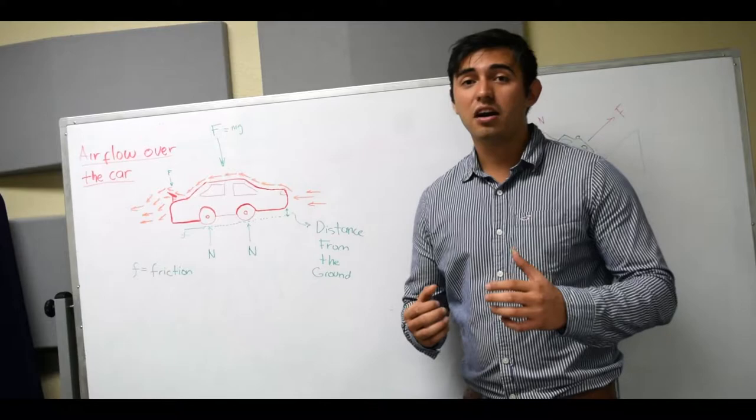Now that we saw this example, engineers have come up with ways to create more downforce in the car. One of these is the distance from the car to the ground, and the other one is the winglet which is off of the car.